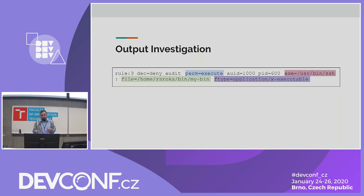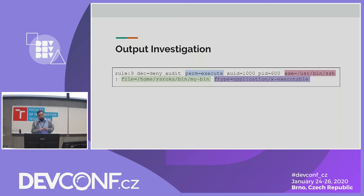We can see that the event had execute permission, and the subject is my shell, which is going to execute my binary with the file type marked as an executable.